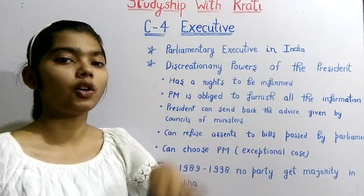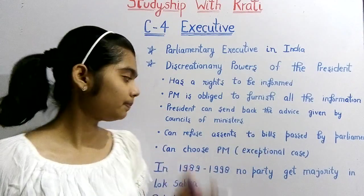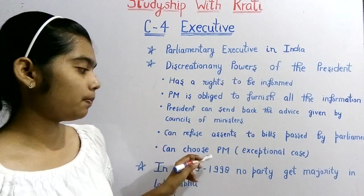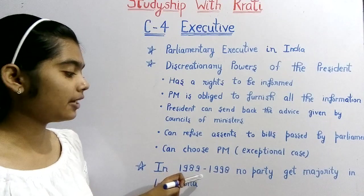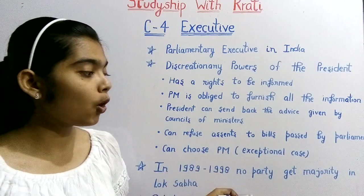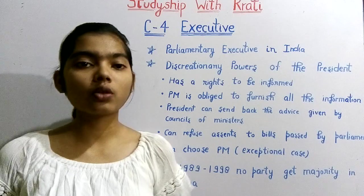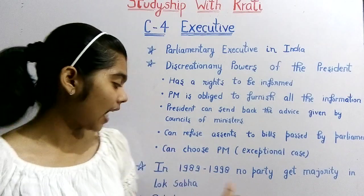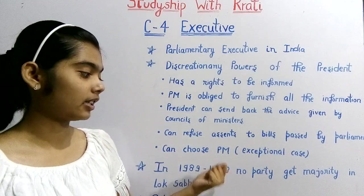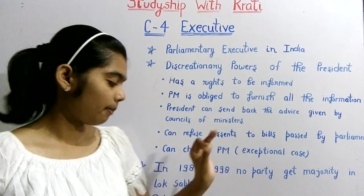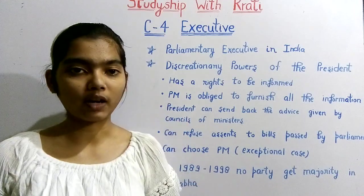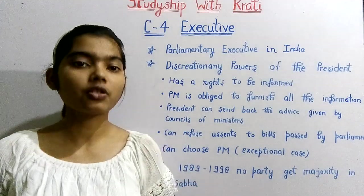Now, choosing the PM. If you see the case from 1989 to 1998, no single party got a majority in the Lok Sabha elections. The Lok Sabha elections from 1989 were held four times during this period. When there is no majority in the Lok Sabha, a coalition government is formed. When no single party has a clear majority, the coalition government comes to power.